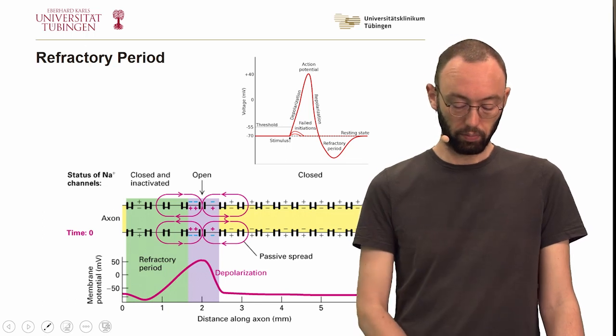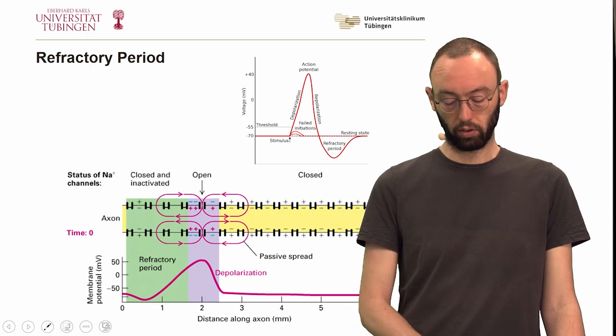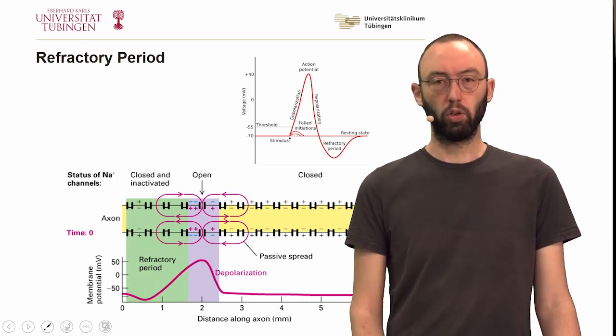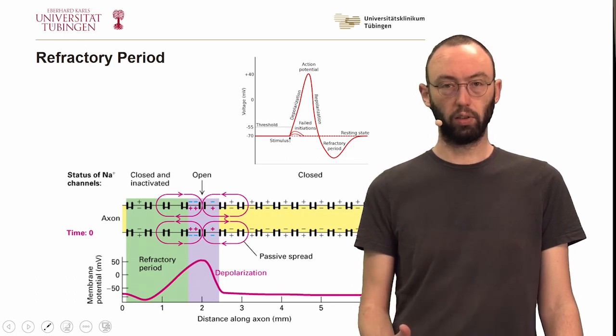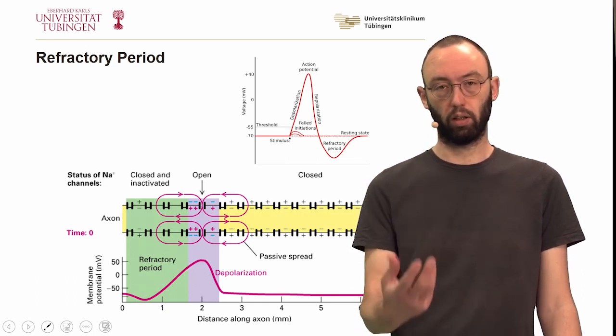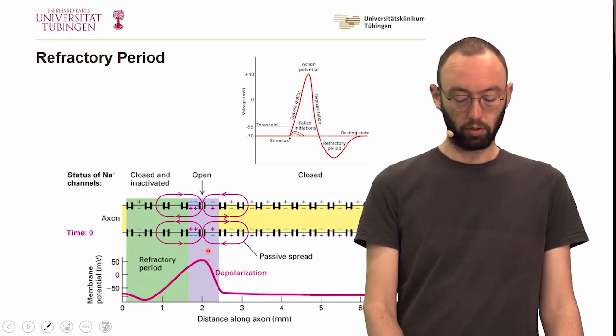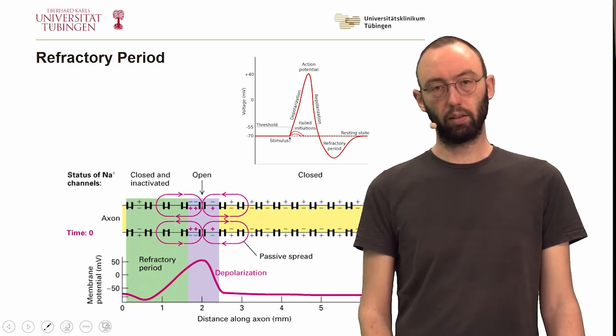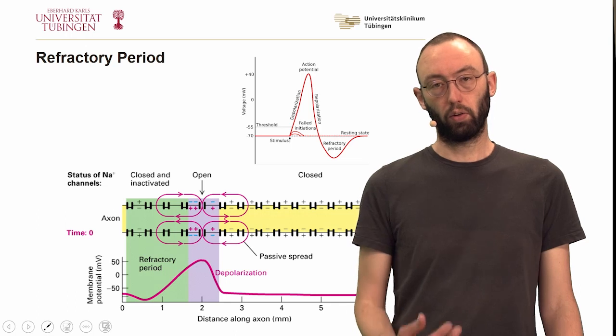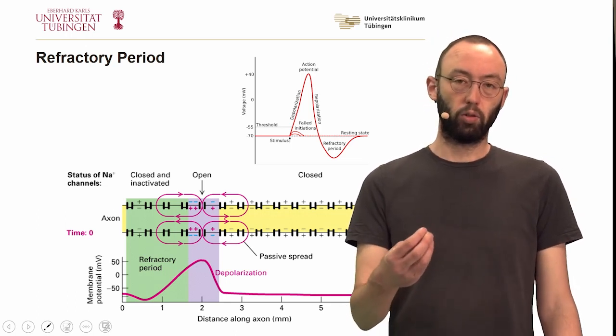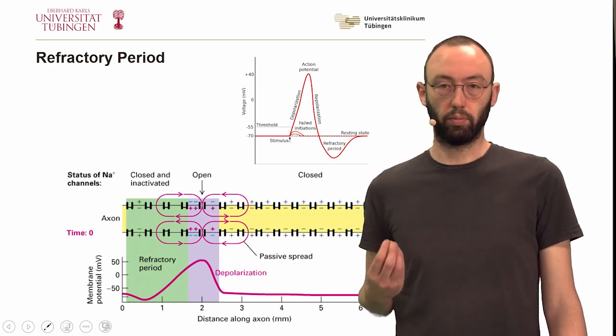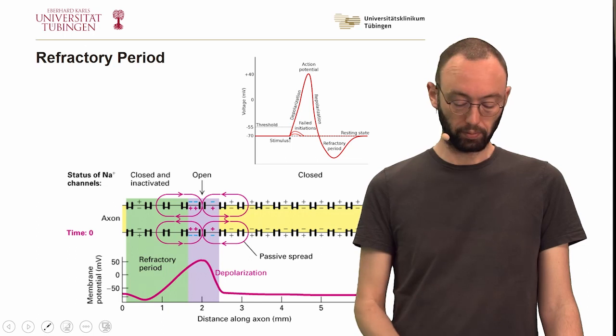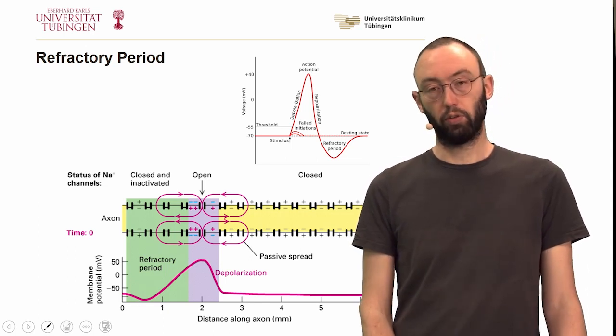What is happening is that along the distance of the axon, the action potential is traveling in this direction. In the depolarization phase, we have the sodium channels opening, moving from the passive resting state to an activated state. Then we have the potassium channels opening as well, leading to the repolarization. Then we have this refractory period because the sodium channels, after becoming activated, don't go straight back to a resting state, but they go to a deactivated or inactive state where they cannot be easily opened directly again. This is the physiological basis of the refractory period.